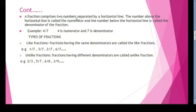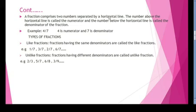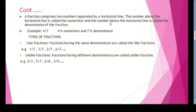A fraction comprises 2 numbers separated by a horizontal line. The number above the horizontal line is called the numerator, and the number below the horizontal line is called the denominator of a fraction. For example, in 4 by 7, the number 4 is the numerator and 7 is the denominator.